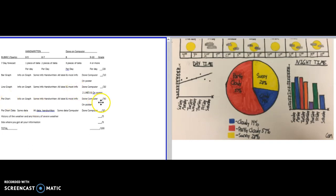A pie chart done on computer is 30 points. These are a little trickier, so sometimes they end up being handwritten. If they are, the highest grade you can get is 7 out of 10. Seven times three is 21 out of 30, which still isn't bad. You can still get a 100 if you do everything else using the computer.